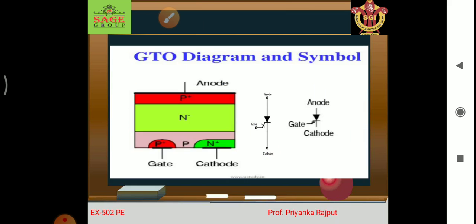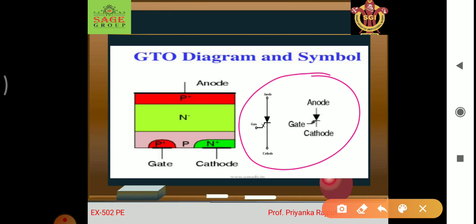Now, this is the symbol of GTO. It is a three-terminal device: anode, cathode, and gate. There is another symbol variation also showing anode, cathode, and gate. The GTO symbol is similar to the SCR but differs by the bisecting line through it.